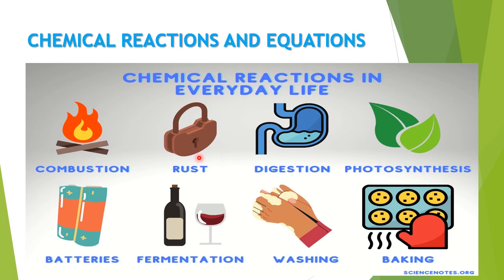Rusting — rusting of iron is also a chemical reaction. Digestion of food in our stomach is another example. Photosynthesis — during photosynthesis, plants take in carbon dioxide, water, and sunlight to prepare food. That is also a chemical reaction.